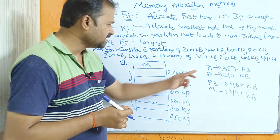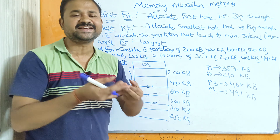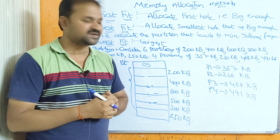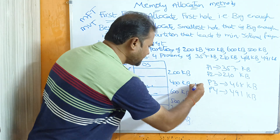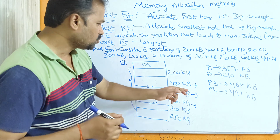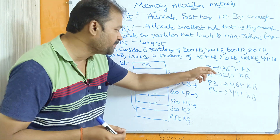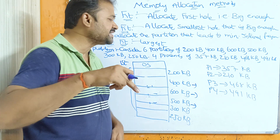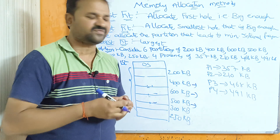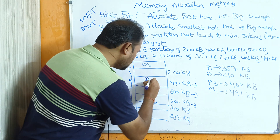For P1 (size 357 KB), we scan all six partitions. P1 can fit in 400 KB, 600 KB, or 500 KB partitions, but not in 200, 300, or 250. Out of 400, 600, and 500, the smallest is 400. Storing P1 in 400 gives internal fragmentation of 400 - 357 = 43 KB, which is less than if stored in 600 or 500. So store P1 in the 400 KB partition.